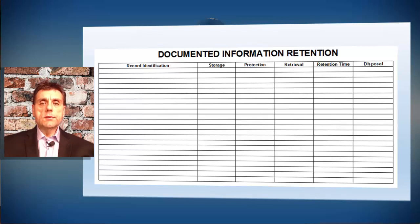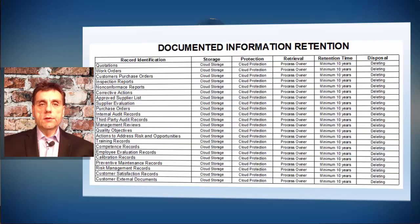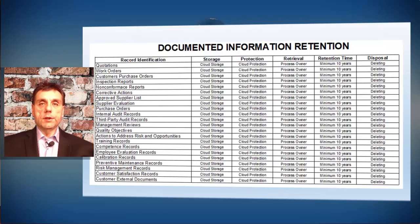Let's look at one example of how a documented information retention matrix, form, or table should look. We may decide to keep our quotations, with storage on our cloud, for example. This is just an example — it could also be a folder cabinet if we are not fully modernized.